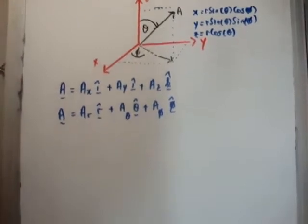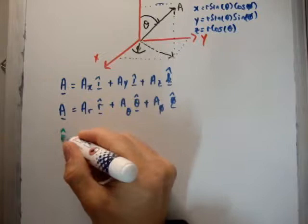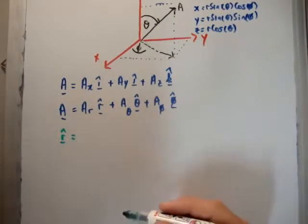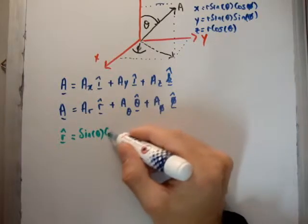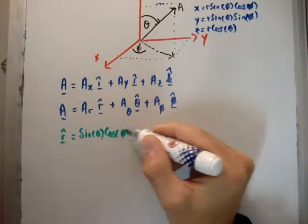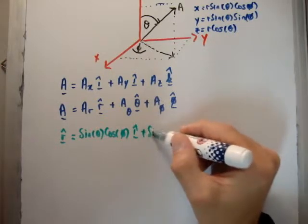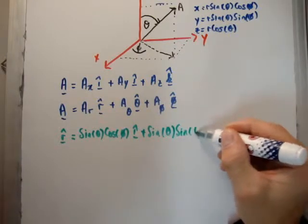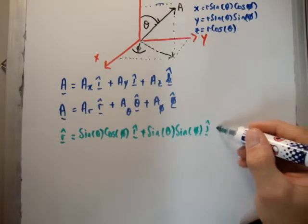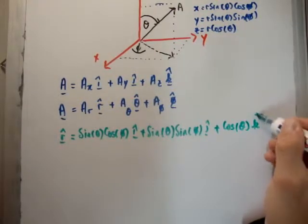So in order to be able to use this particular format, we need to come up with the unit vectors themselves. So, like I said, I proved this in the previous video, that r hat is sin theta cos phi in the i hat direction, plus sin theta sin phi in the j hat direction, plus cos theta in the k hat direction.